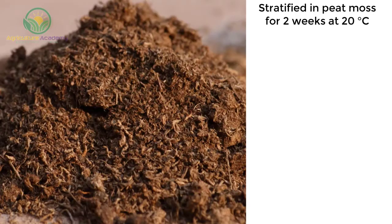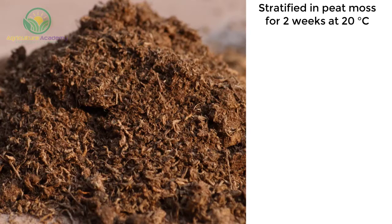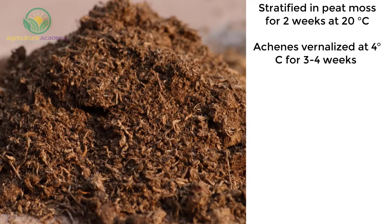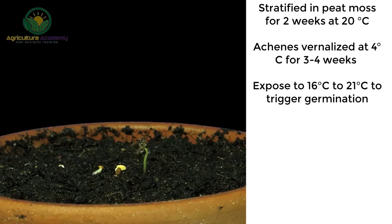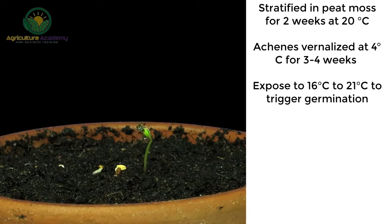The achine is scarified to enhance water uptake. They are then stratified in sphagnum peat moss for two weeks at 20 degrees Celsius. After this, the achines are vernalized at four degrees Celsius for three to four weeks. Lastly, to trigger germination, the achines are exposed to temperatures of 16 to 21 degrees Celsius.